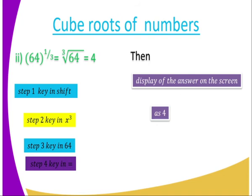Let us look at another number: 64 raised to the power one-third. Using indices, this is the same as the cube root of 64. So when using the calculator, you just press shift — remember the cube root is not a standalone key, but you press shift then the cube key. After that, key in 64, then press equals and the answer will be displayed. The answer becomes 4.